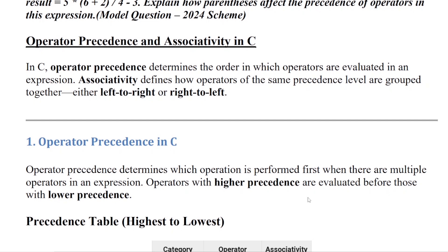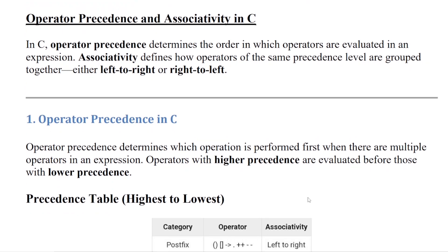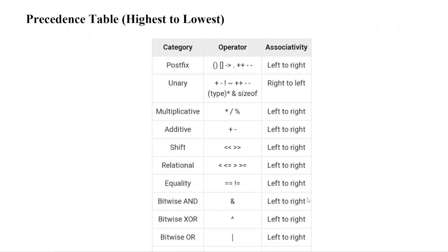Operators have a defined order in which they are evaluated. This order is based on precedence, or ranking. There is a precedence table that lists operators from highest to lowest.